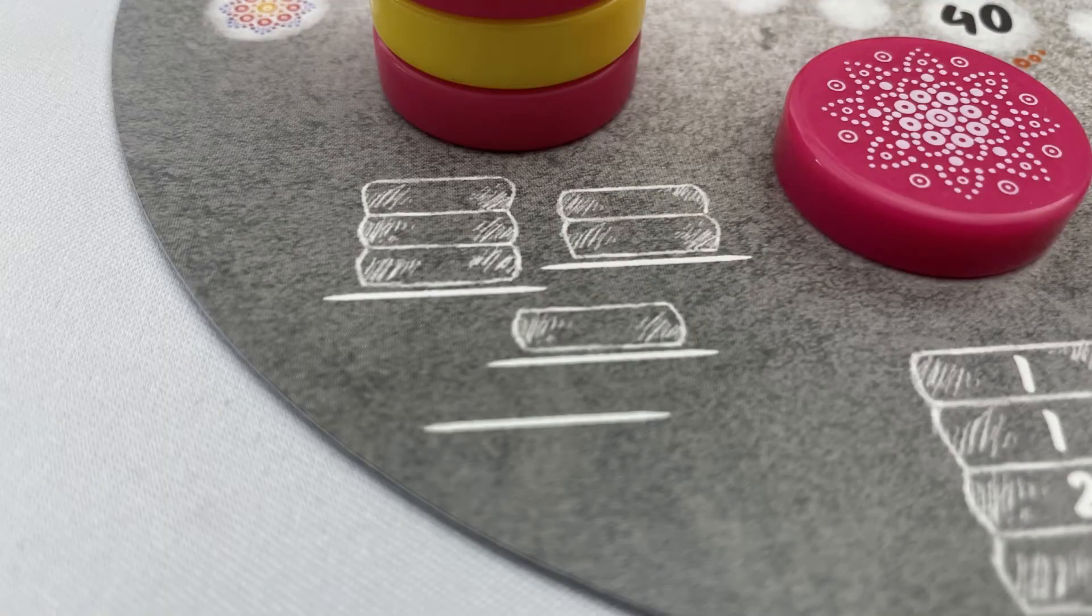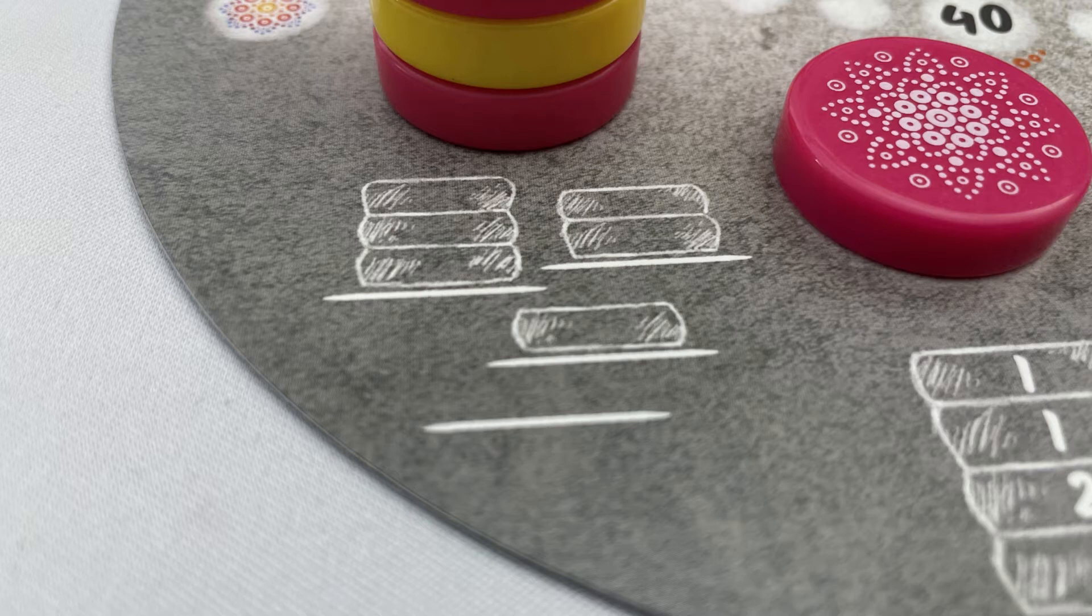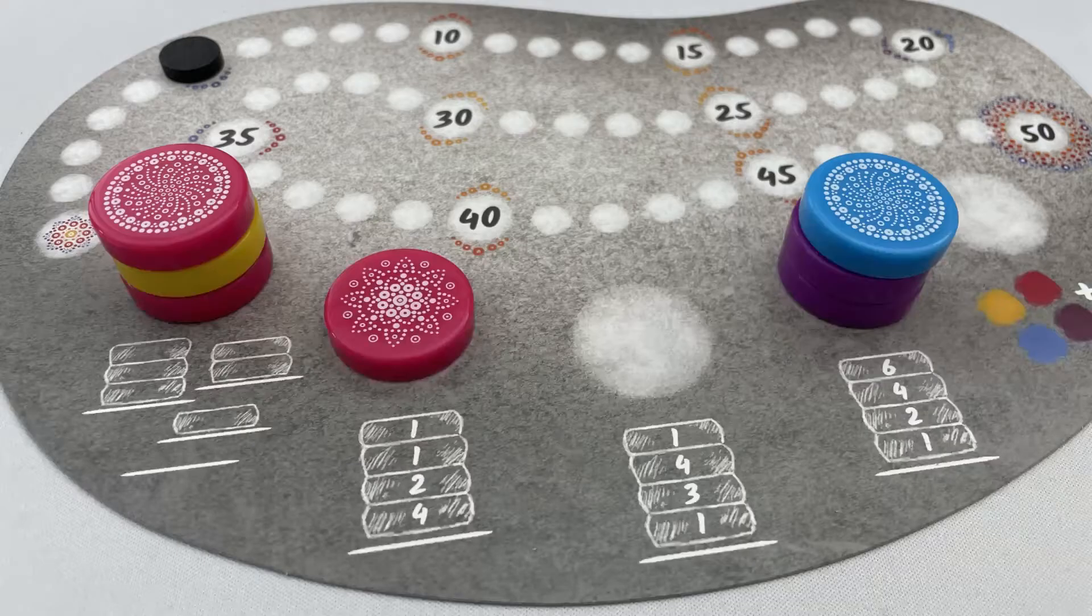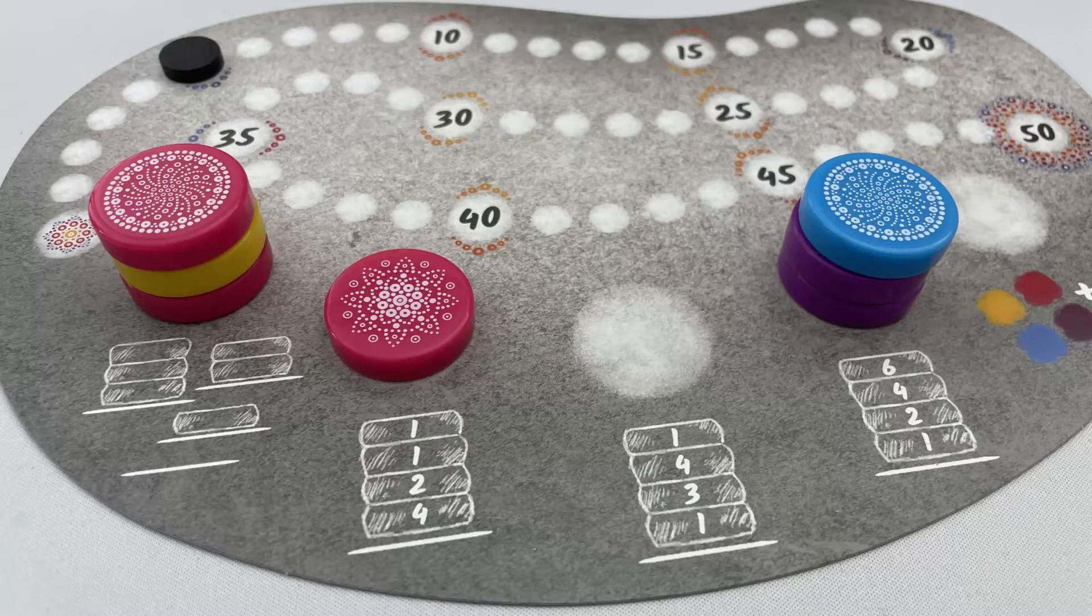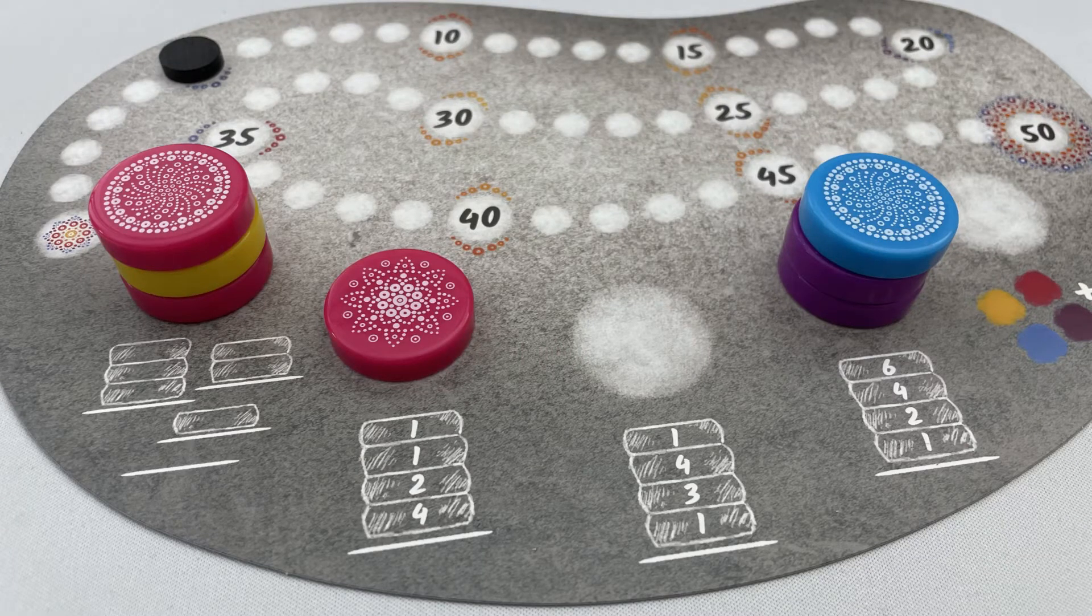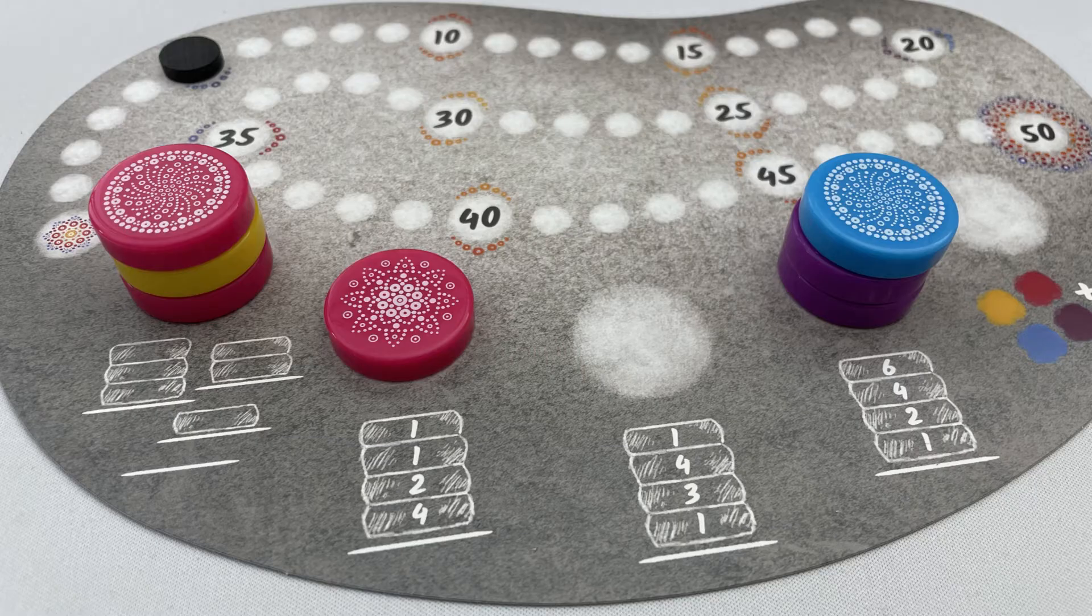The left tower scores for height variation. Score one victory point for each tower of a different height among all towers on your player board, including zero. For example, here I have two towers three high and one one high. That gives me three points, for having three different tower heights, zero, one and three.